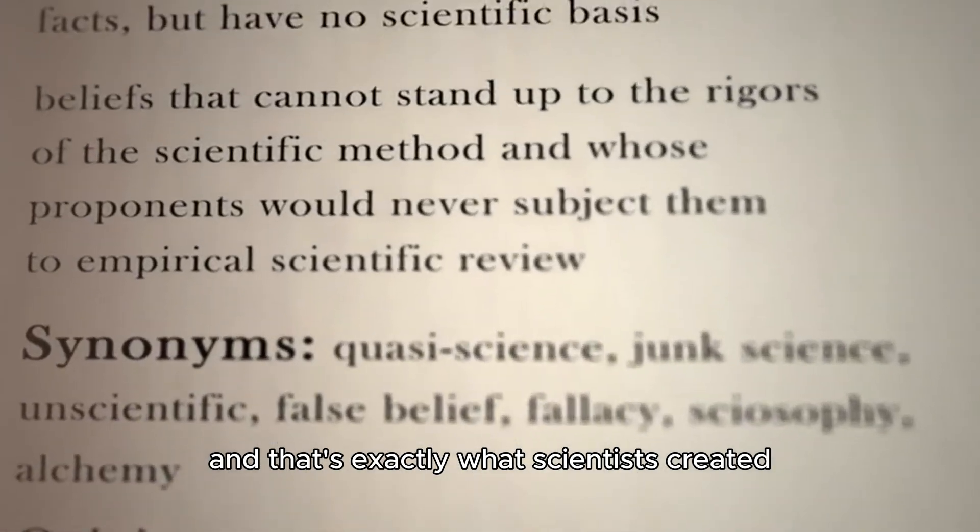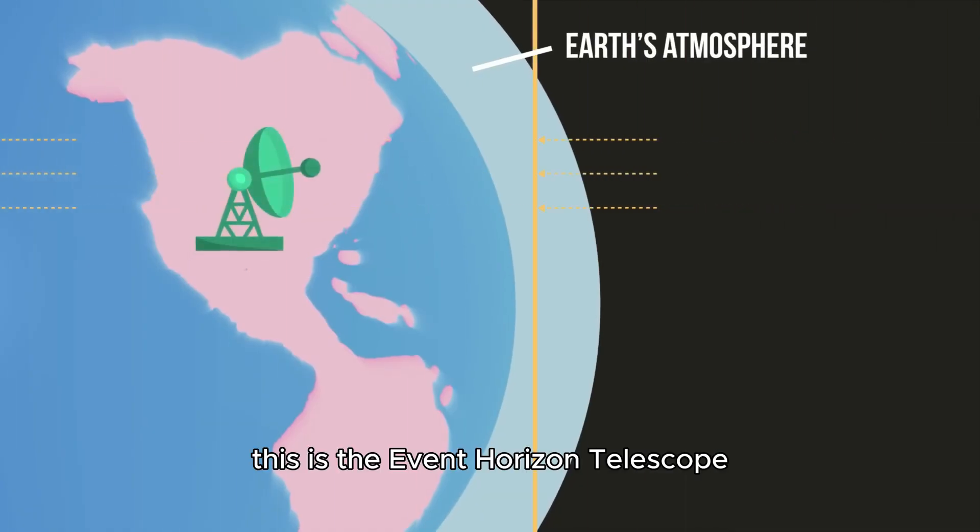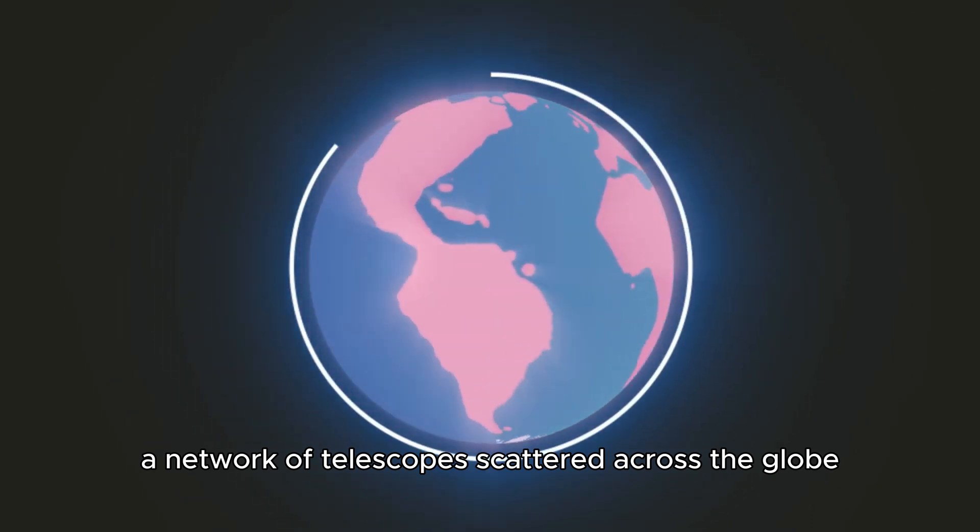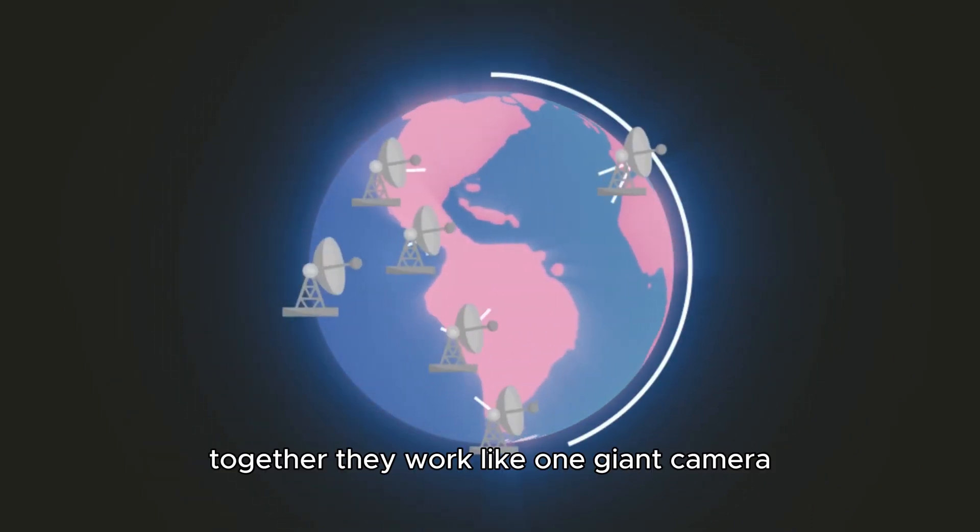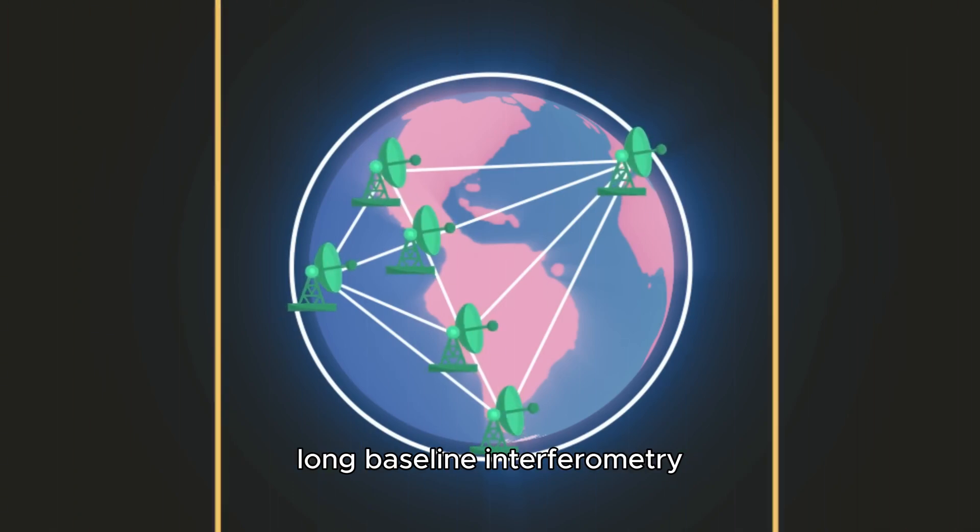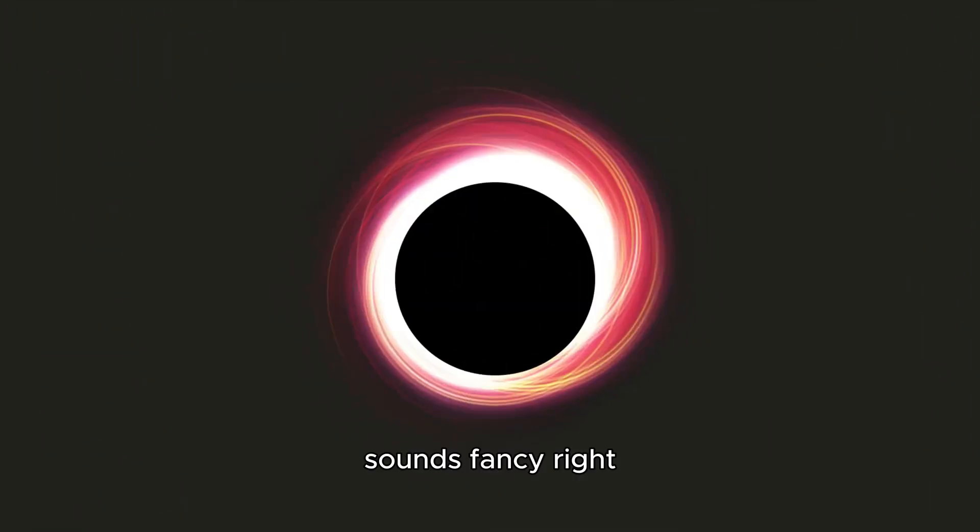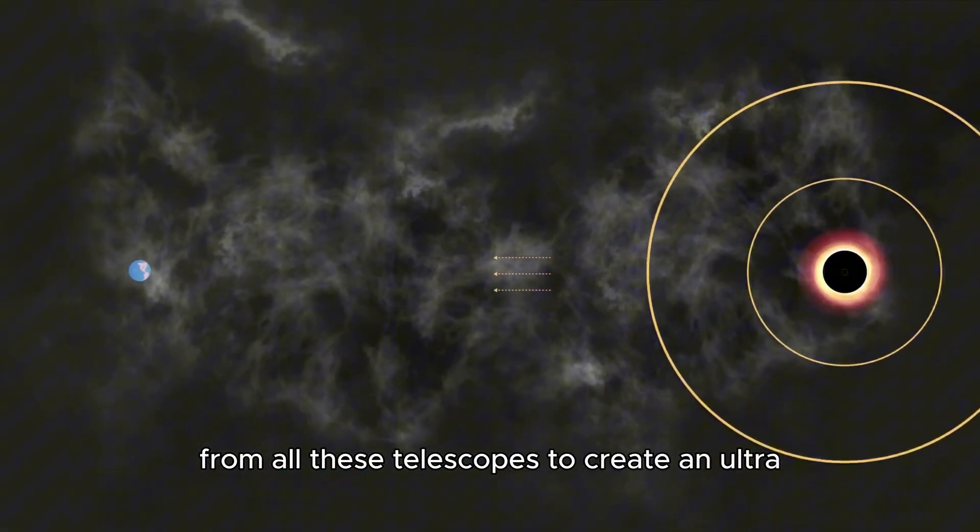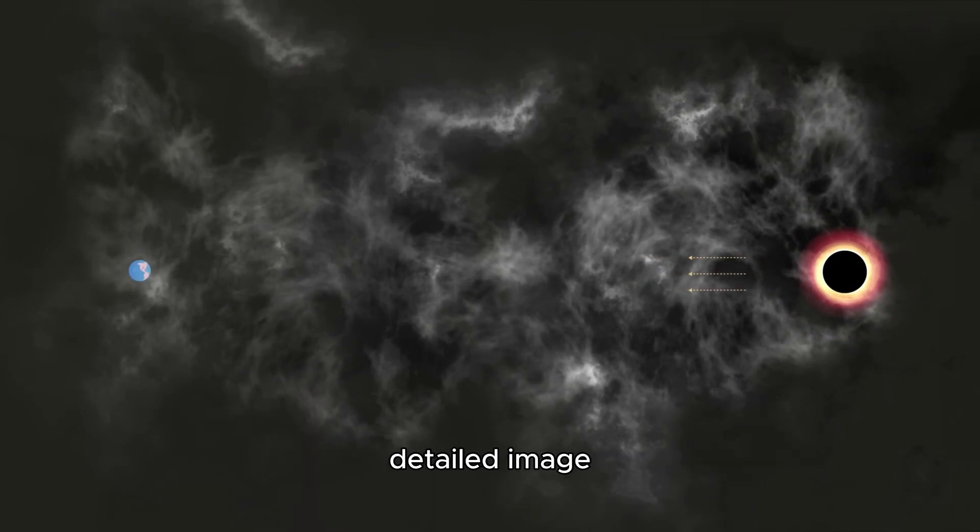And that's exactly what scientists created. This is the Event Horizon Telescope, a network of telescopes scattered across the globe. Together, they work like one giant camera, using a technique called Very Long Baseline Interferometry. Sounds fancy, right? It basically means we combine data from all these telescopes to create an ultra-detailed image.